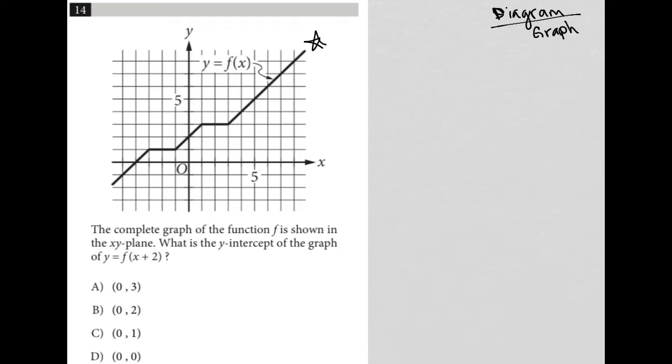The next sentence says what is the y-intercept of the graph of y equals f of x plus 2? So what is this plus 2, right? This is the only difference between y equals f of x, which we saw here, and what we're being asked about.